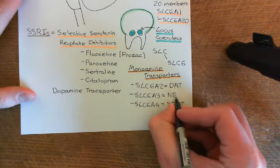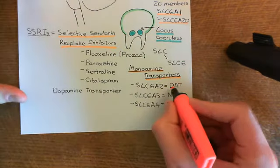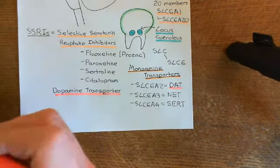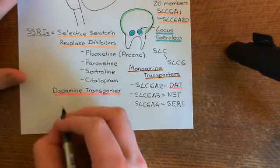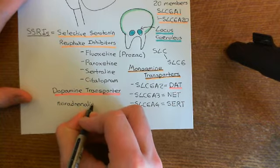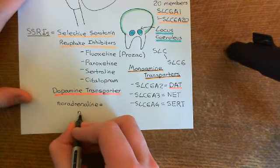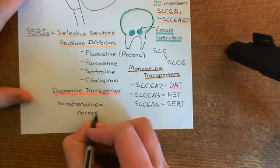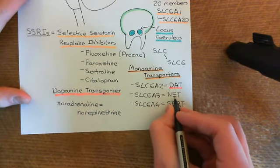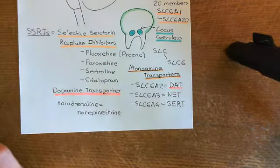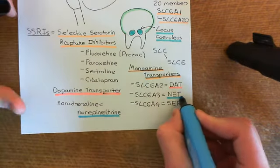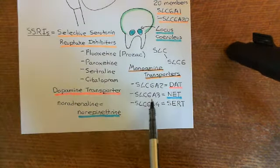SLC6A3 is the transporter for noradrenaline, and it's called NET. In America, they don't call noradrenaline noradrenaline anymore - there is another name, which is norepinephrine. Now we can understand why this transporter is called NET - it stands for Norepinephrine Transporter. If it were called the noradrenaline transporter, it would be NAT rather than NET. These are the boring official names, which are helpful for memory, because instead of remembering 20 different names for the SLC6 members, you can just remember SLC6A and then numbers one through twenty.